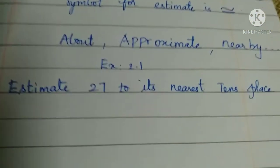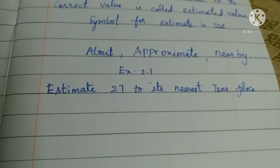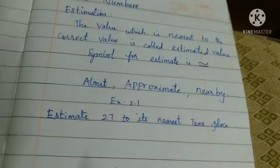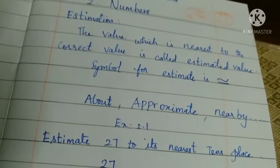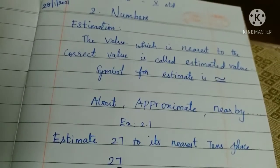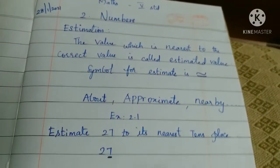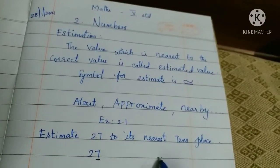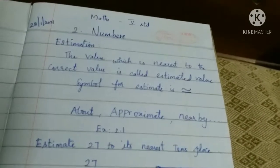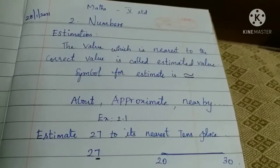Now, from Exercise 2.1, we are going to estimate 27 to its nearest tens place. So we take the number 27. We need to see the range of the number. 27 is between 20 and 30 in the tens place.